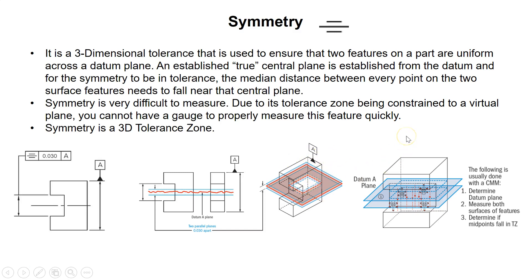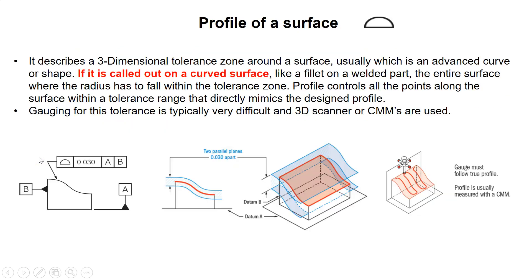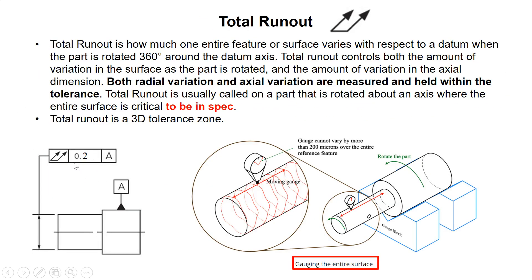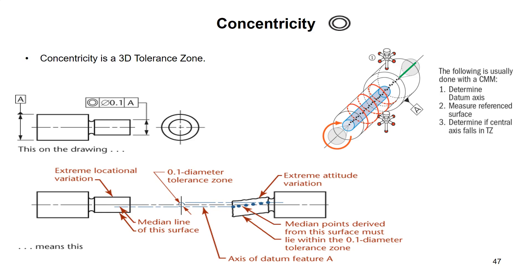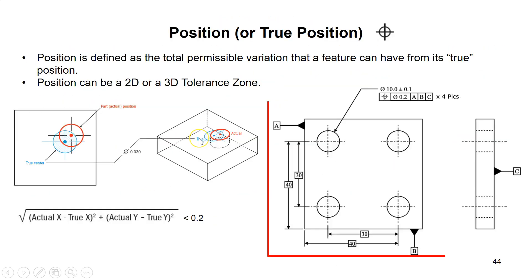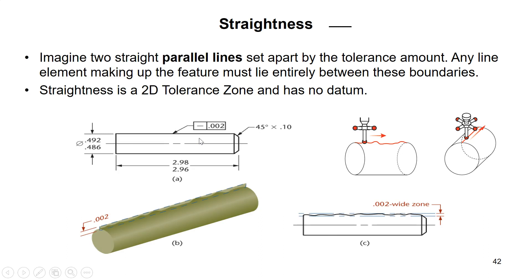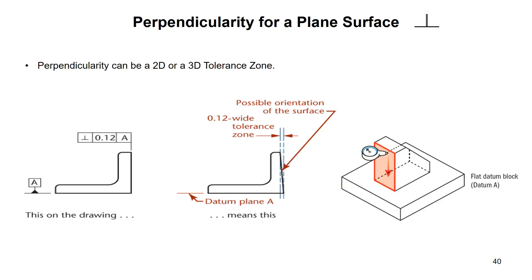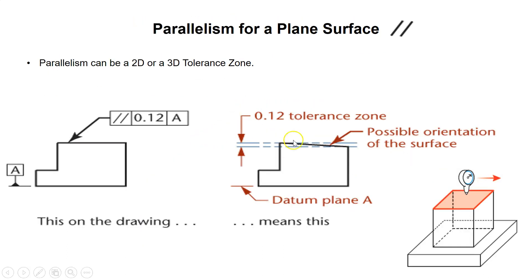These are all the different GD&T symbols. Hopefully this clarified what they mean and how you can gauge them. In the next lecture we will talk about maximum material condition (MMC) and least material condition (LMC). Thank you so much and I'll see you in the next video.